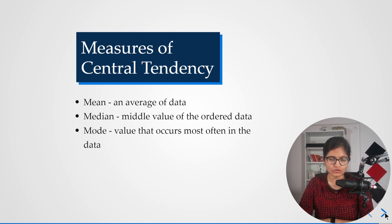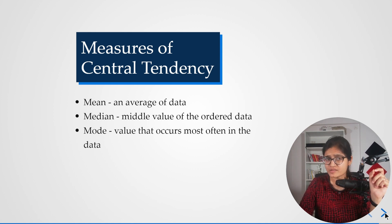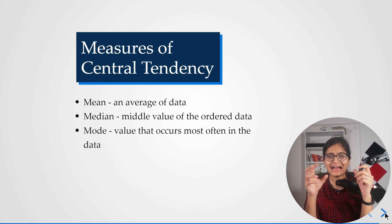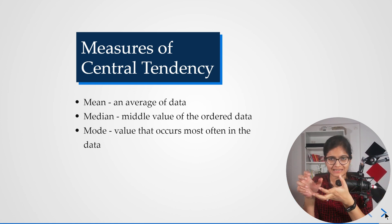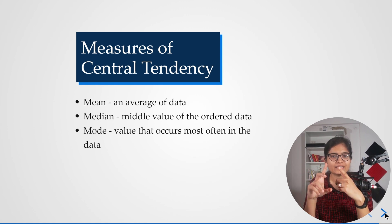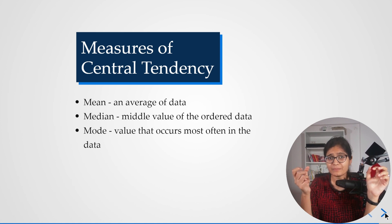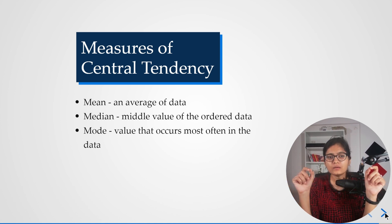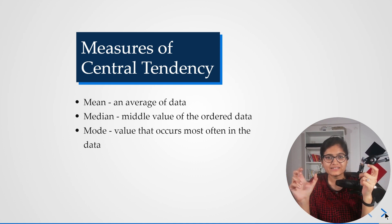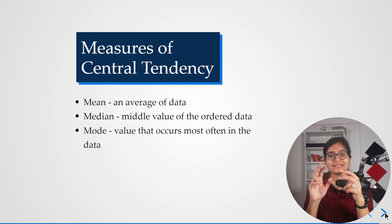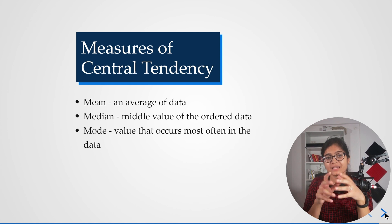Now let's talk about measures of central tendency: mean, median, and mode. For mean, you obviously need numeric data. Mean is nothing but an average of the data. For example, with data values 2, 4, 6, and 8, the mean is 2 + 4 + 6 + 8 divided by 4 — the total number of values. Mean is simply the average.